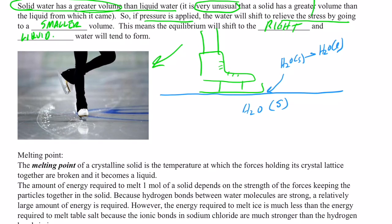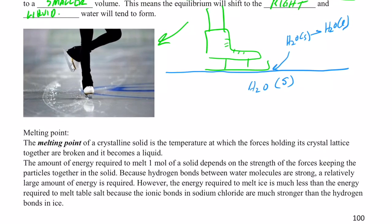Alright, we are back. Today we're going to talk about melting and boiling point, and we'll even have a demonstration partway through today's video. So let's discuss melting point. If we have a solid and it reaches a temperature where the forces holding its crystal lattice together are broken, it then becomes a liquid — that's called melting. The amount of energy required to melt one mole of a solid depends upon the strength of the forces keeping the particles together.